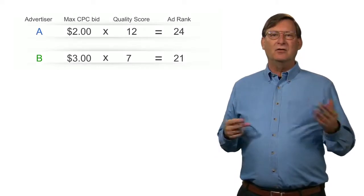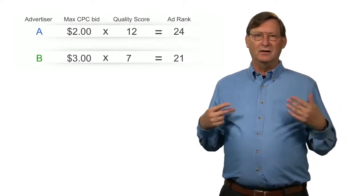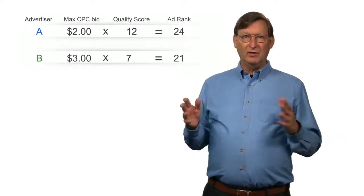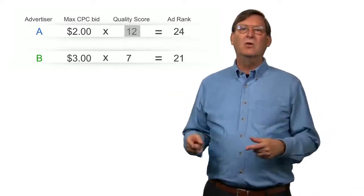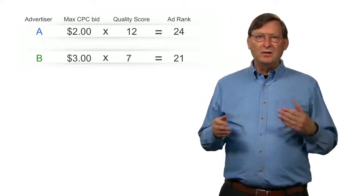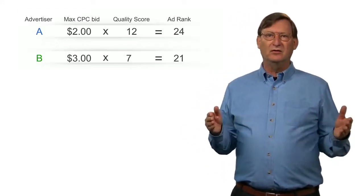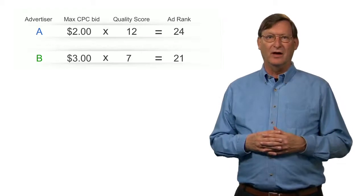Suppose we have two advertisers, A and B, who are bidding $2 and $3 for a cost per click ad in a particular auction. Advertiser A has a quality score of 12, while advertiser B has a lower quality score of 7. So by multiplying the max CPC bid by the quality score, we get each advertiser's ad rank.